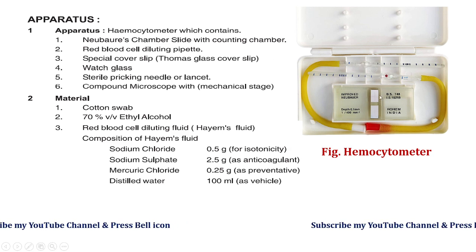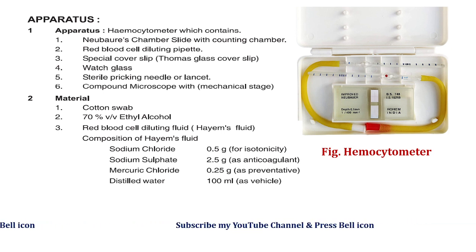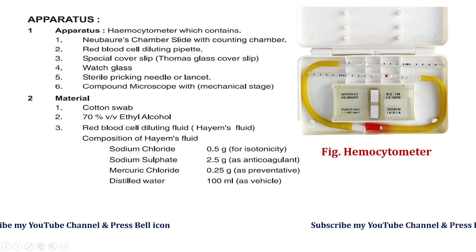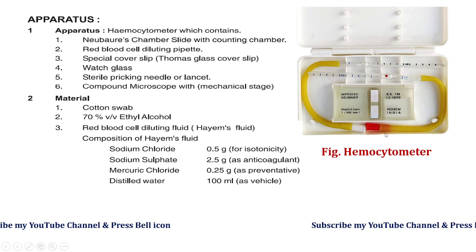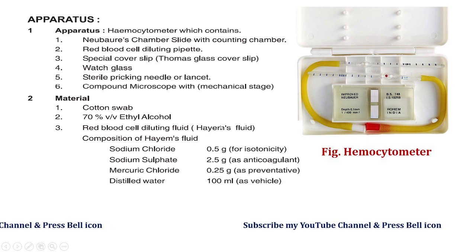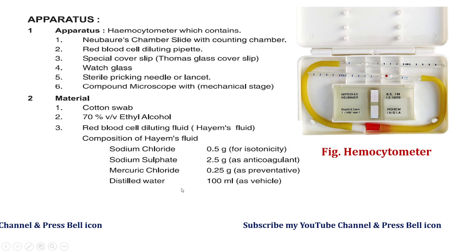The hemocytometer contains two pipettes — RBC and WBC pipettes. For this RBC experiment, select the red-mouth sucker pipette. The apparatus also includes a Neubauer counting chamber slide with a cover slip, wash glass, needle, and compound microscope. Materials needed include cotton swabs, 70% ethyl alcohol, and RBC diluting fluid — also known as Hayem's fluid — which contains sodium chloride, sodium sulfate, mercuric chloride, and distilled water.